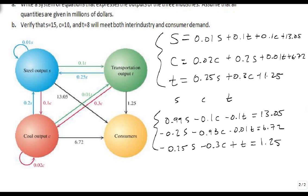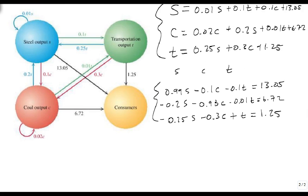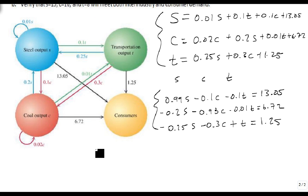If you remember, there was a second part to this question. This said that if s is 15, and c is 10, and t is 8, will this meet both the inter-industry demand as well as the consumer demand? So what we're going to do is we're going to plug in 15 for s, so s equals 15, c equals 10, and t equals 8, and see if that comes out with any true equations.